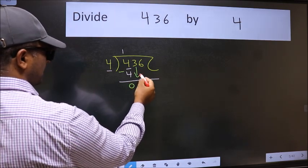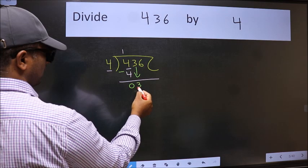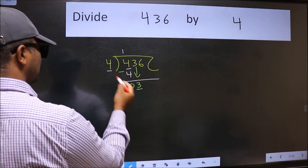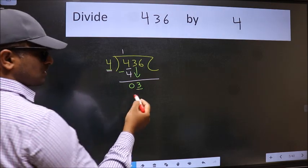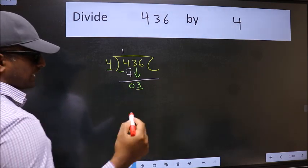After this, bring down the beside number. So 3 down. Now here we have 3 and here 4. 3 is smaller than 4. So we should bring down the second number.